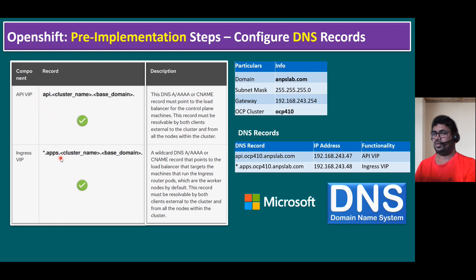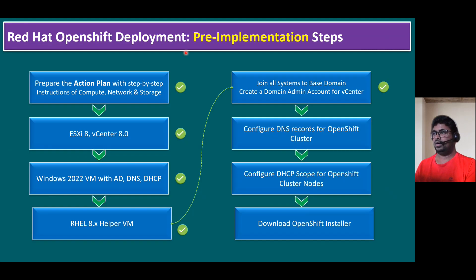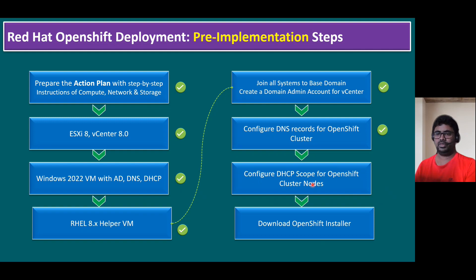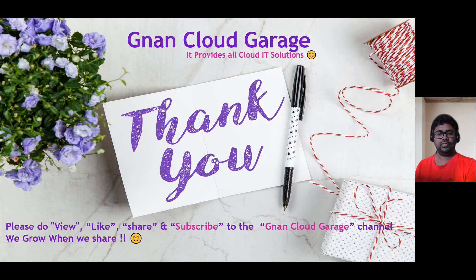So we created the api.clusterName.baseDomain record and the wildcard apps record. Now let's recap our pre-implementation steps — the infrastructure is ready and we've configured the DNS records for the OpenShift cluster. In the next session, I will show you how to configure DHCP scope specifically for OpenShift cluster nodes. Thank you. If you are watching this video for the first time, please like, share, and subscribe to the NAND Cloud Garage channel. If you are already subscribed, I appreciate all your support. Bye for now.